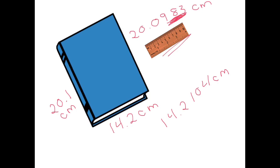If you actually need to report to those places, you're going to need a much more expensive measuring tool than this ruler. When we increase precision, we typically increase the cost because the measuring tool needs to be more precise, and we'll most likely need to take more time to make the measurement. And obviously, time is money.